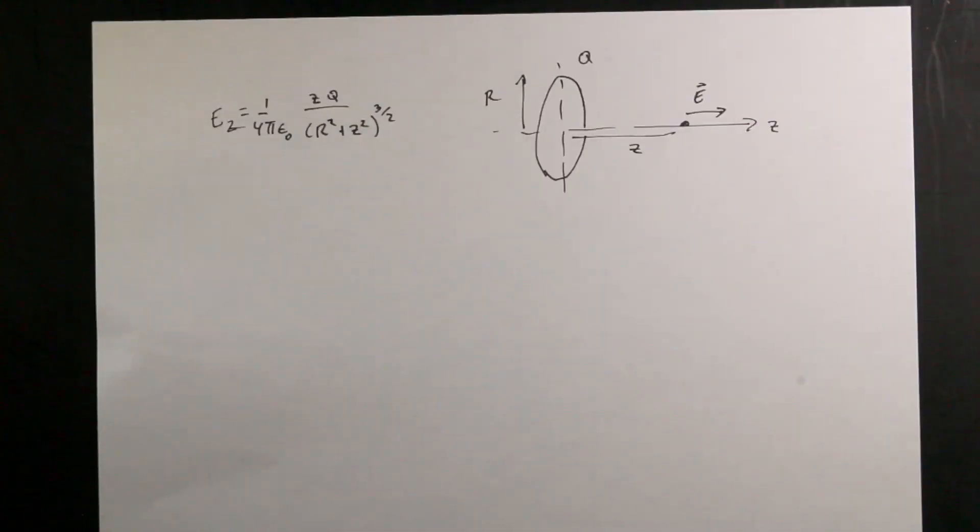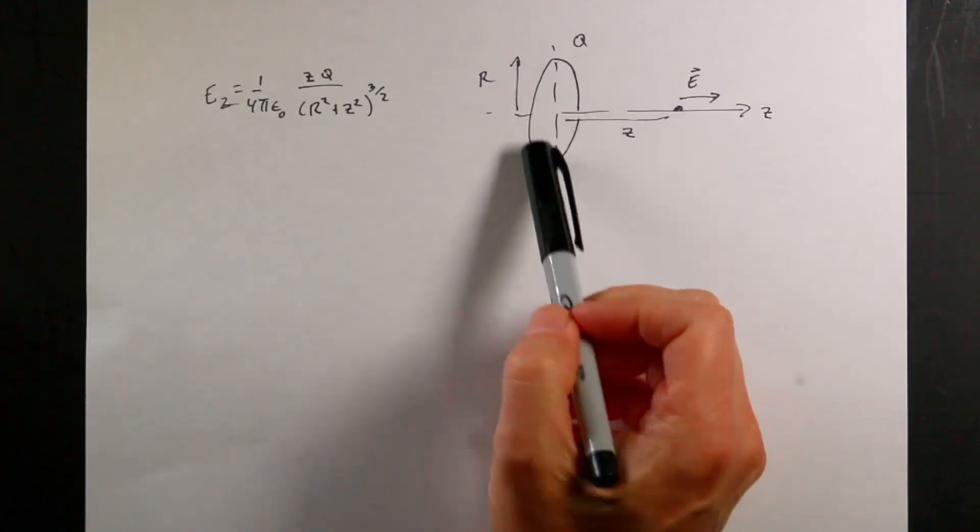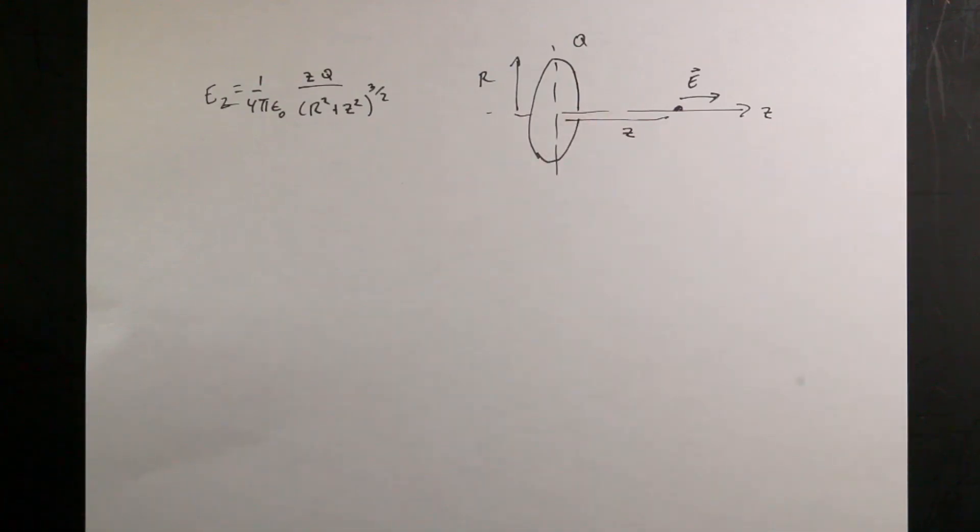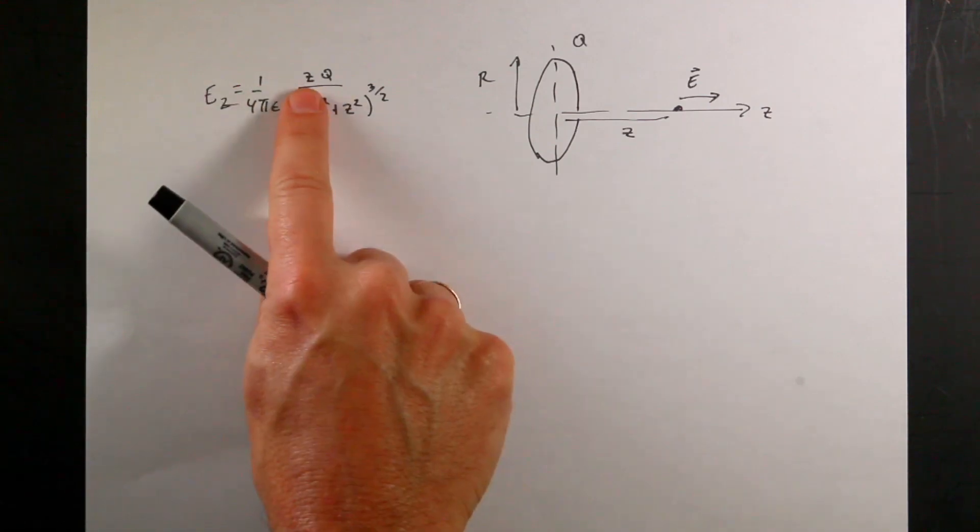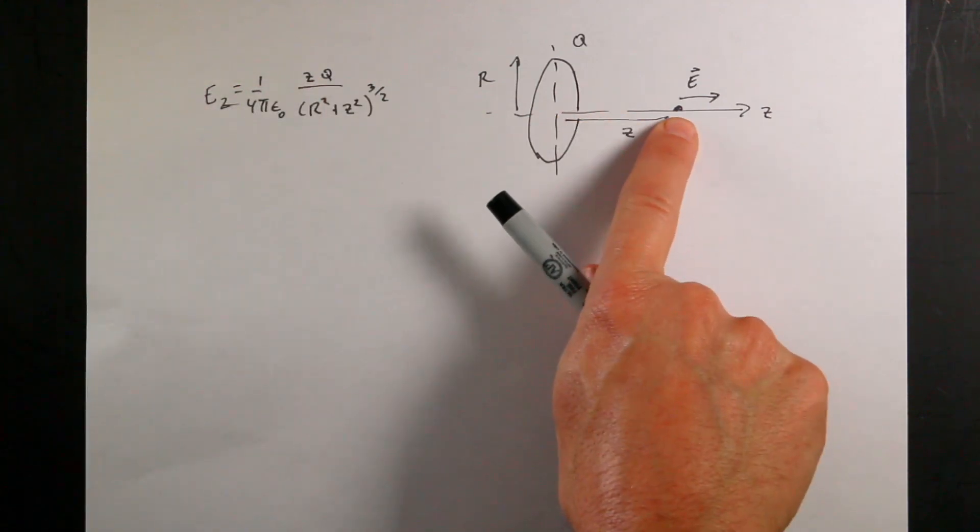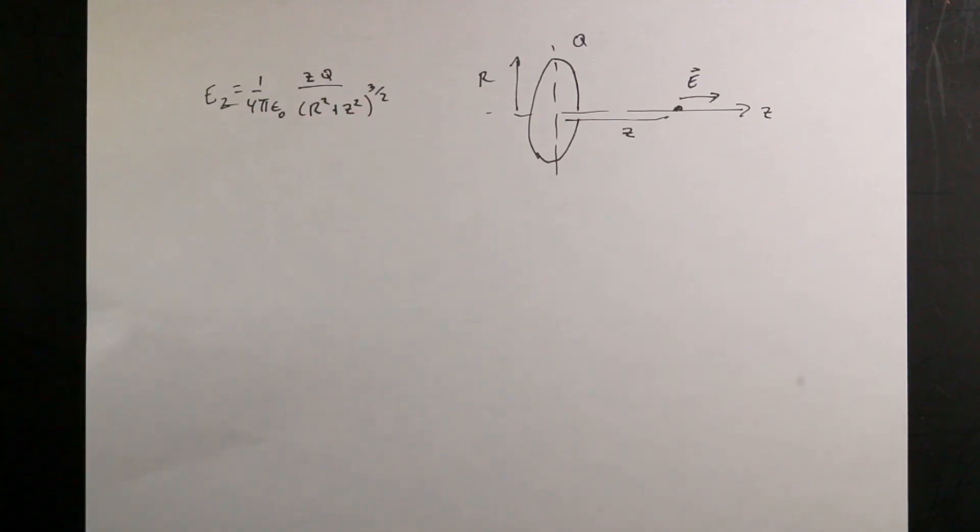Here is a ring in the xy plane and this is the z direction. We're trying to find the electric field right there. We can create an integral to determine the electric field on the z-axis. You get this expression: E_z = (1/4πε₀) × z × q / (R² + z²)^(3/2). z is the distance from the center, q is total charge, R is radius.